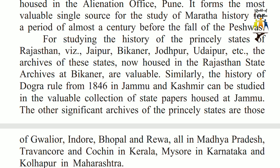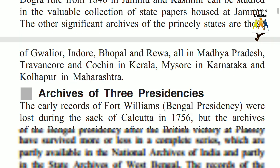For studying the history of the princely states of Rajasthan — Jaipur, Bikaner, Jodhpur, Udaipur, etc. — the archives of these states, now housed in the Rajasthan State Archives at Bikaner, are valuable. Similarly, the history of Dogra rule from 1846 in Jammu and Kashmir can be studied in the valuable collection of state papers housed at Jammu. The other significant archives of the princely states are those of Gwalior, Indore, Bhopal and Rewa in Madhya Pradesh, Travancore and Kochi in Kerala, Mysore in Karnataka, and Kolhapur in Maharashtra.